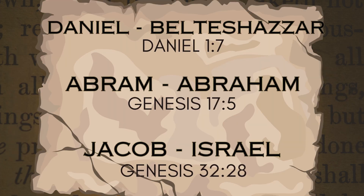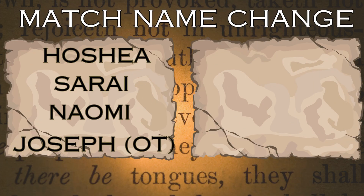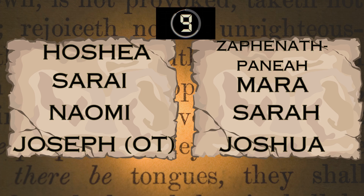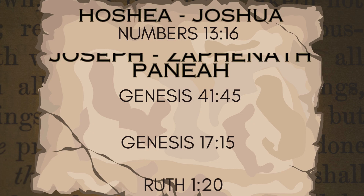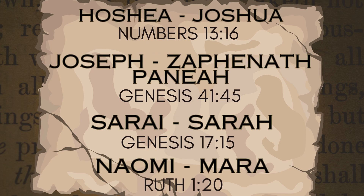Daniel was given the name Belshazzar when he was exiled to Babylon. God changed Abram's name to Abraham, and God also changed Jacob's name to Israel. Match the original names of Hosea, Sarai, Naomi, and Joseph.